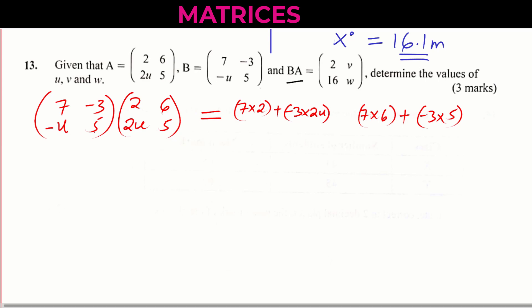Now we go to row 2 of the matrix B times column 1 of matrix A. So negative U times 2 plus 5 times 2V. So that is what you're supposed to get.